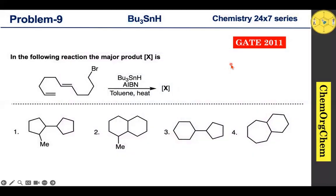This problem is from GATE 2011. According to this problem, this substrate reacts with tributyl tin hydride in the presence of AIBN, which produces a major product X. There are four options given. Let's figure out together which one is the correct option for this question.